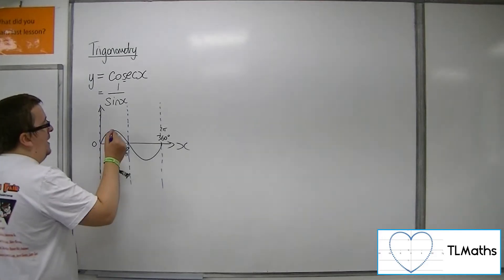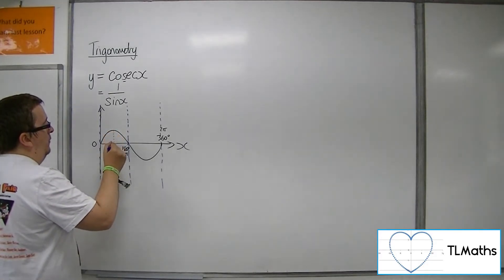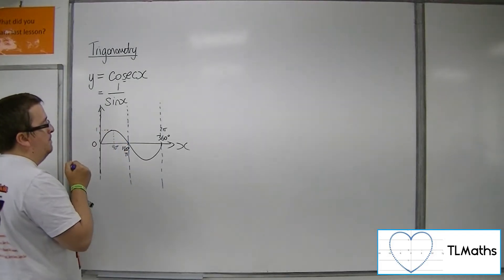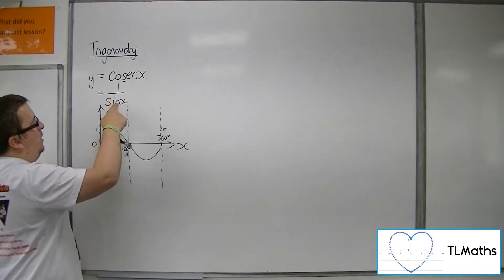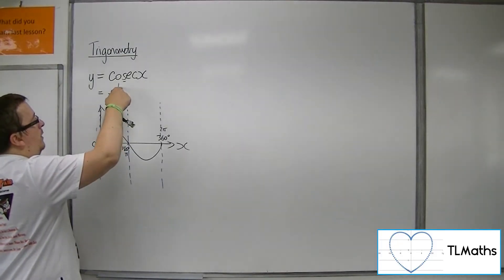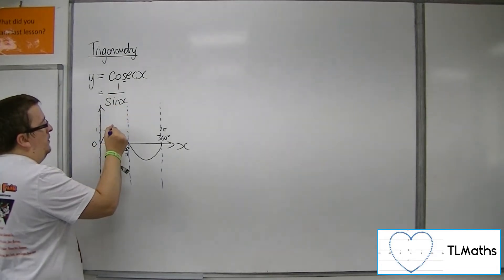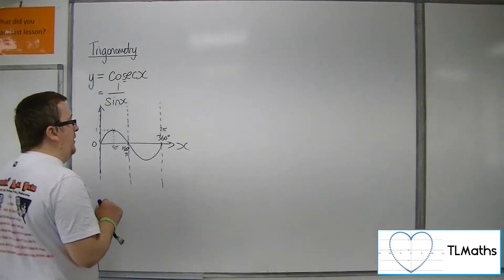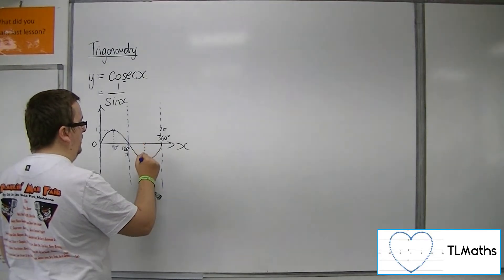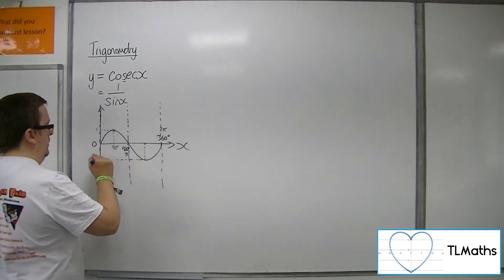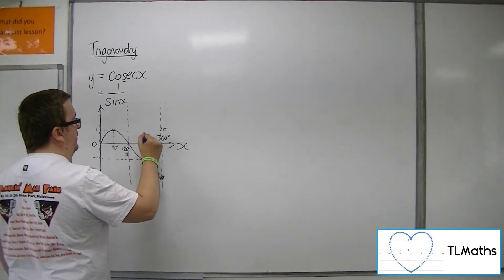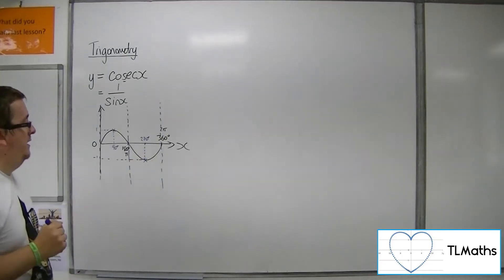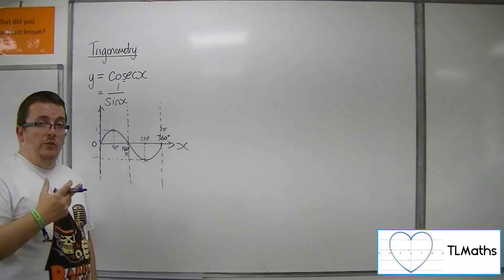When you're at 90 degrees, for sine you get 1. That means when you've got 1 over sine of 90 degrees, you've got 1 over 1, which is 1. So the cosec curve must go through that point. And for precisely the same reason, at 270 degrees our sine curve is minus 1, so 1 over minus 1 is minus 1, and so the cosec curve must go through minus 1 at 270.